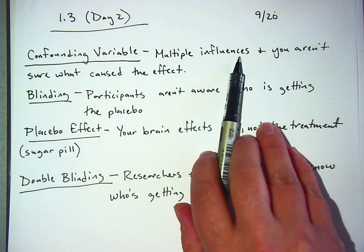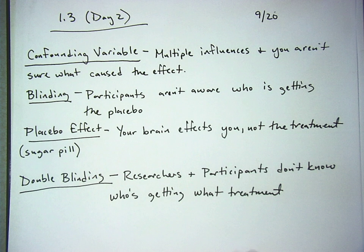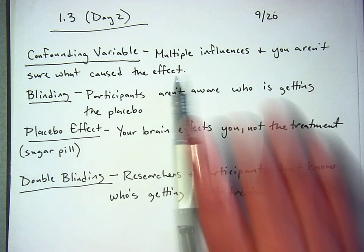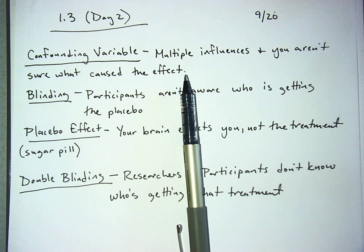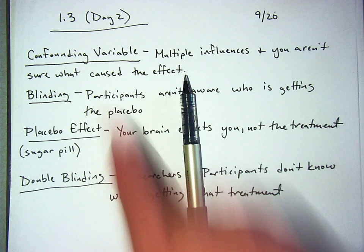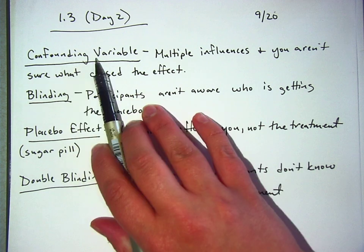A confounding variable is when you have multiple influences and you aren't sure what caused the effect. Normally in an experiment you want one thing to change so you know that thing contributed to the change you're seeing as a result. The example I used in class: if you're trying to see if a new display at the end of an aisle will sell more umbrellas, and then that same day there's a rainstorm and you sell more umbrellas — was it the display, the rain, or both? Rain is an unpredicted confounding variable. It came in at the last second and now you're not sure what's going on. You try to avoid these.